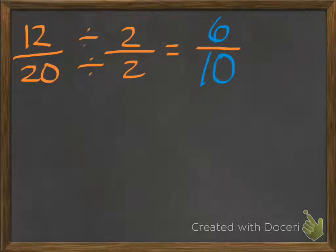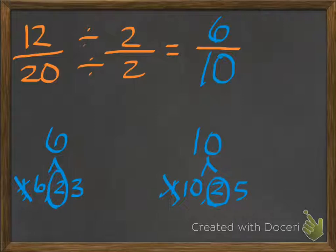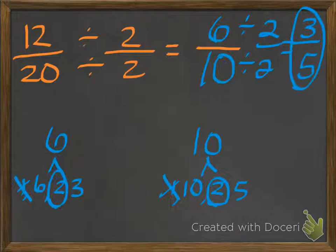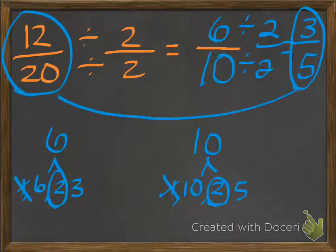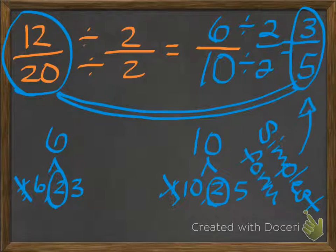When I see 6 tenths, I realize I could divide even further. 6 shares some common factors with 10. The factors of 6 are 1 times 6 and 2 times 3. The factors of 10 are 1 times 10 and 2 times 5. 2 is the same for both of them, so I can divide 6 by 2 and 10 by 2. 6 divided by 2 is 3, and 10 divided by 2 is 5. 3 fifths is the simplest form of the fraction 12 twentieths. We know they are equivalent fractions, but now we know that this is also the simplest form. Simplest form means I cannot divide any other factors out — that's as far as I can go.